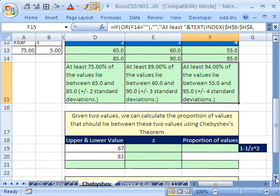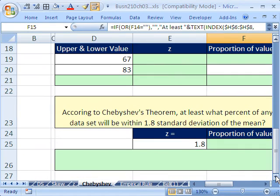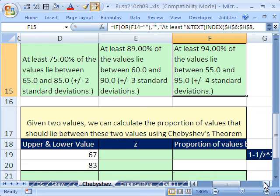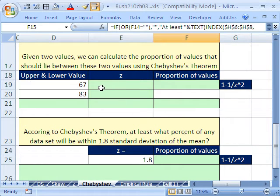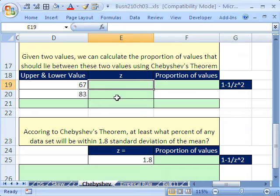Now, let's go down here. We'll blow this up a little bit. Now, we're going to use our same mean of 75 and standard deviation of 5. But here, we're given two values. So here they are, test score of 67 and 83.